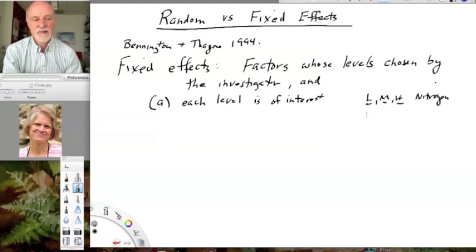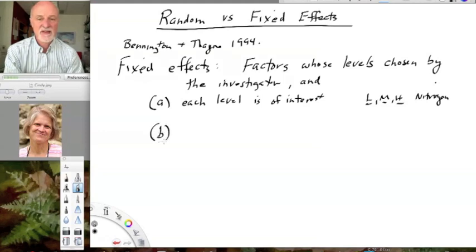And likewise, all levels of, say, a pharmacological treatment, one would be interested in all of those levels. If you're not interested, why would you choose those levels? Now, I'll explain how that differs from other kinds of effects in a moment. But just understand that with fixed effects, we are interested in the means we are getting out of each level. And if we repeated this experiment, we could choose those same levels again.